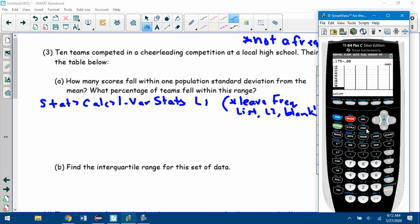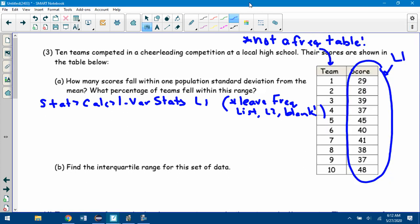We're going to put in L1, but make sure that you leave the frequency list L2 blank, because this has nothing to do with frequencies. These all occurred one time. So we're going to go to stat calc, one variable stats. We have L1. I don't want anything in frequency list. Hit calculate. The mean is 38.2, and the population standard deviation is 5.88 if we do nearest hundredth.